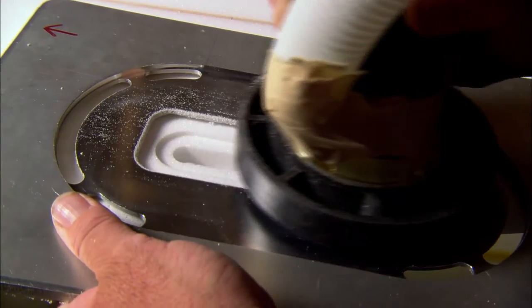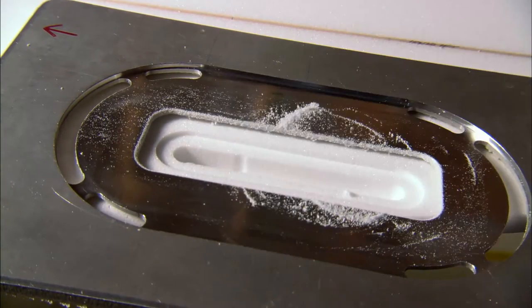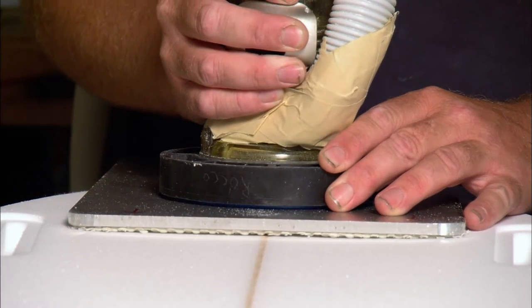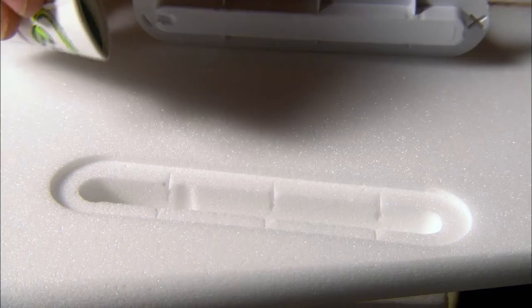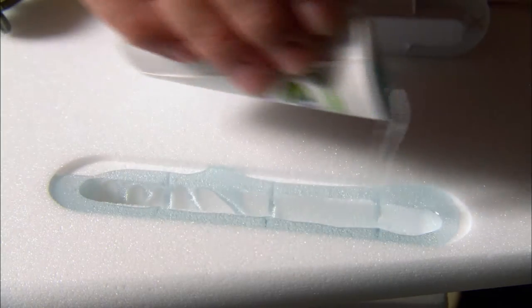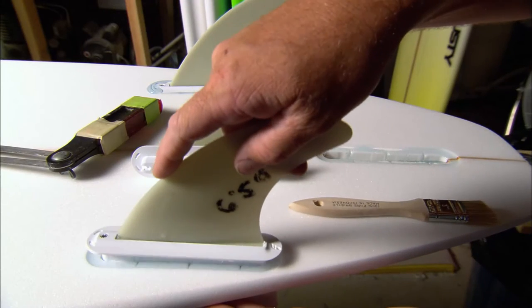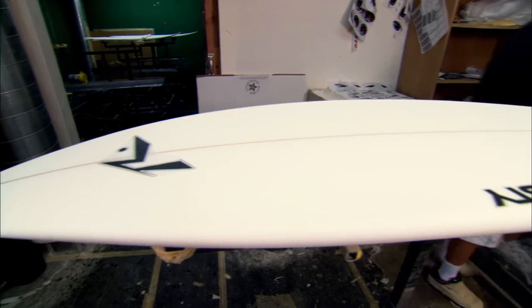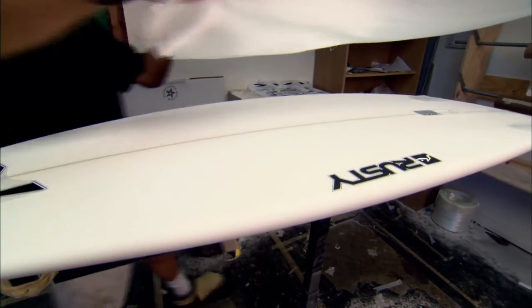Then the board gets its fins. A template sits on the tail so a drill can carve out the spots where the fins are glued on with waterproof resin. The fins act like a boat rudder and guide the board.